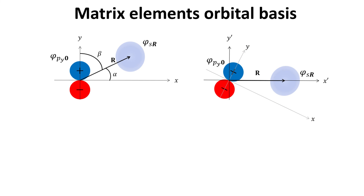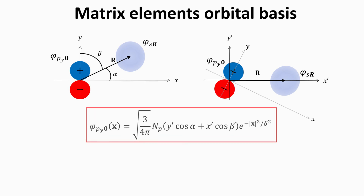Another possibility is that s and p orbitals are not in either of those two configurations. An example is shown in the left figure, where the relative orientation is oblique because the lattice vector makes an angle alpha with the x-axis, with alpha different from 0 and 90 degrees. This case is treated by rotating the coordinate system, as shown in the right figure. The rotation places the s orbital center along the rotated x-axis, with the tilted p orbital at the origin. The wave function for the tilted p orbital is obtained by rewriting the multiplicative coordinate factor in terms of the rotated coordinates.